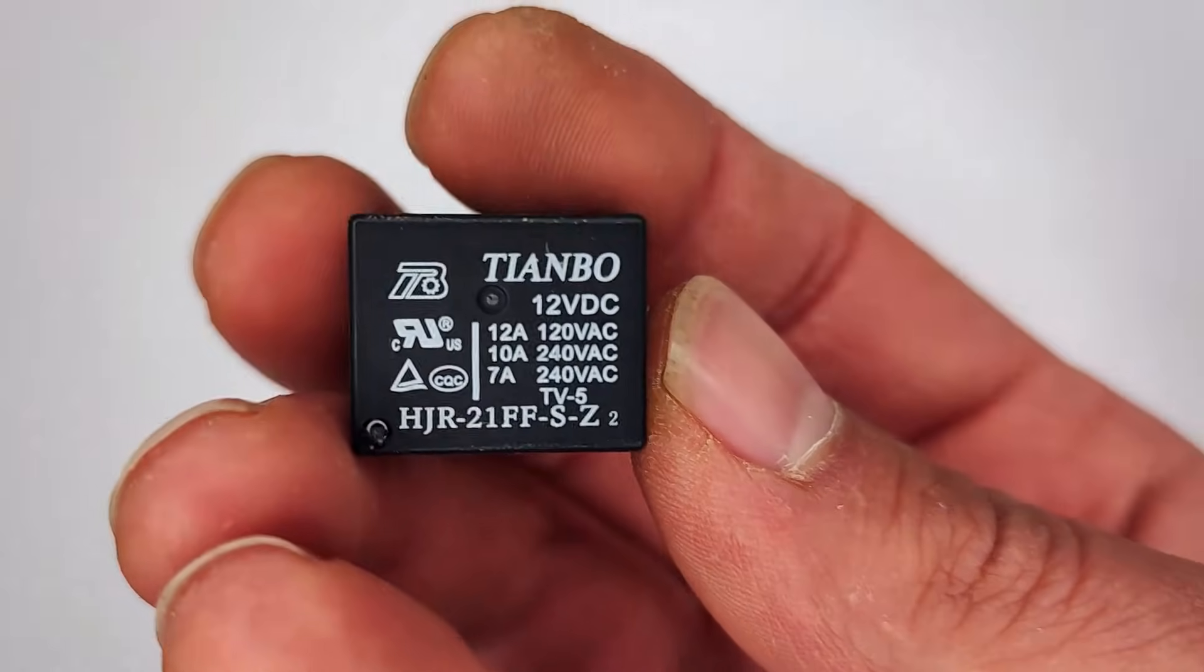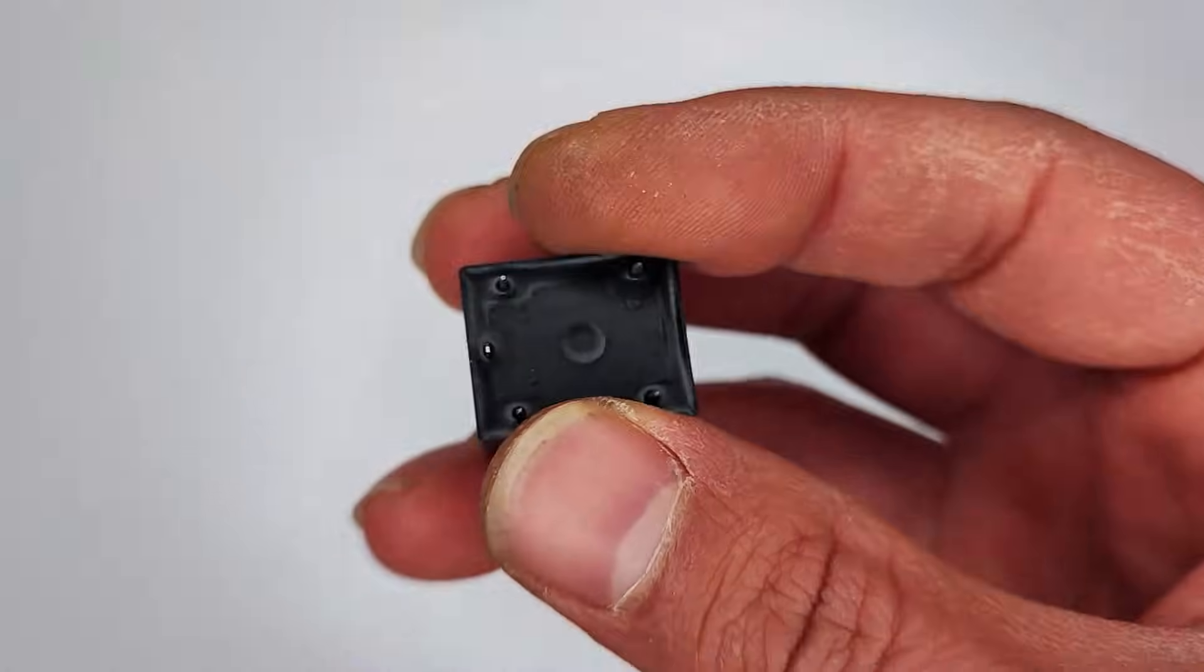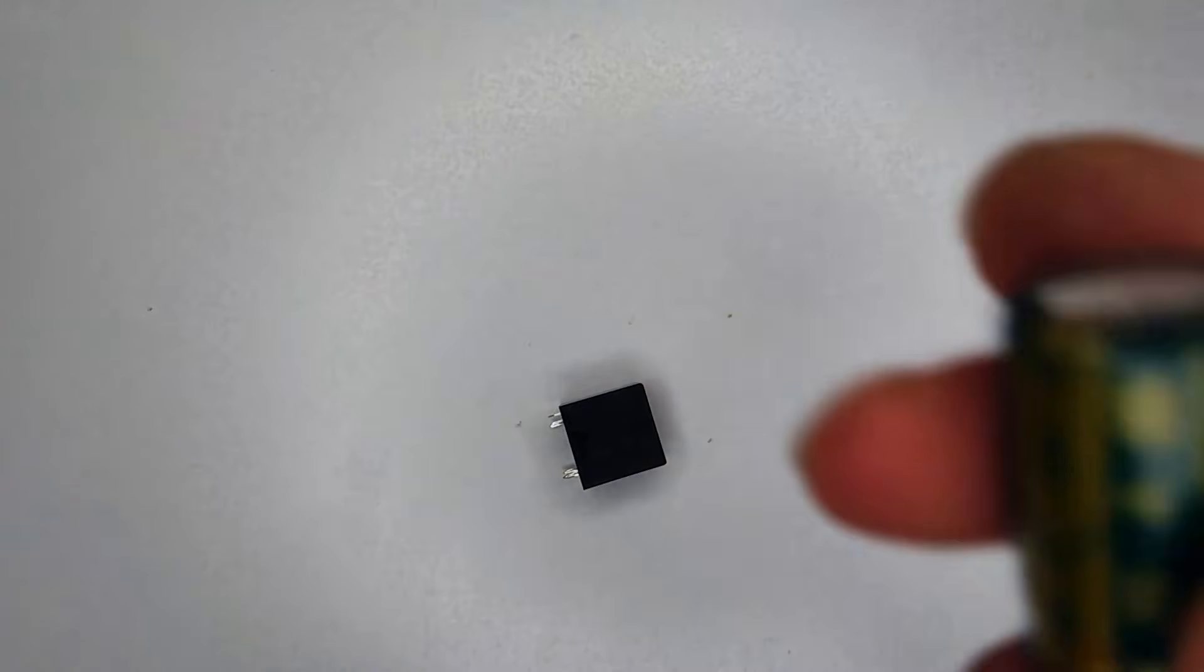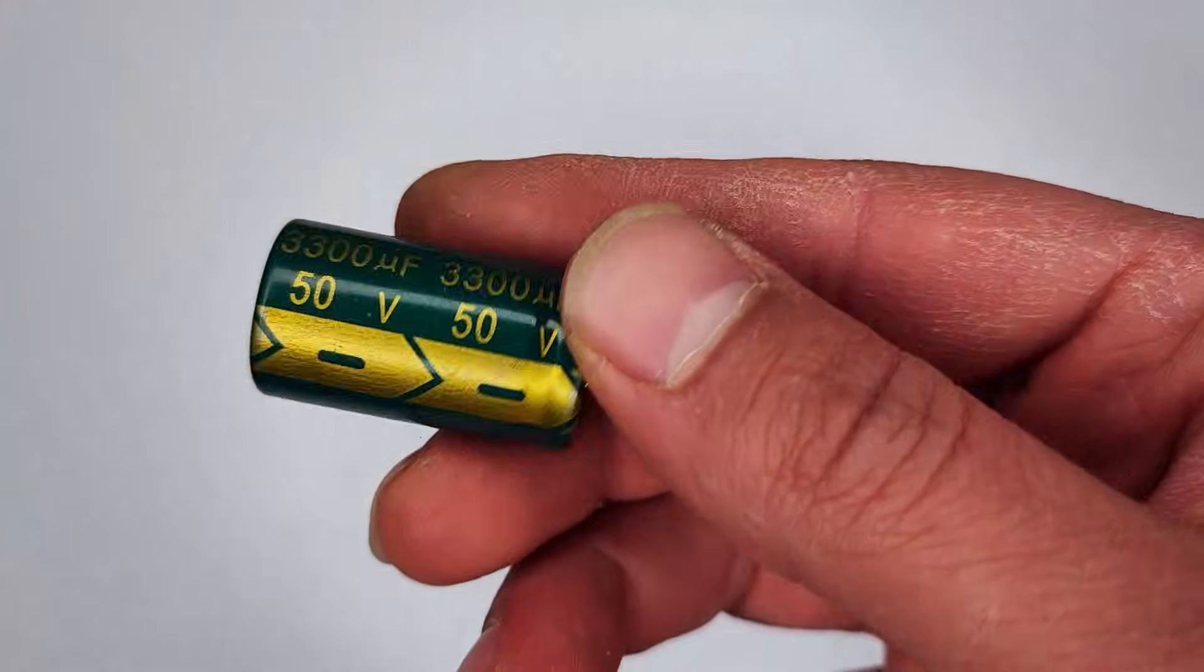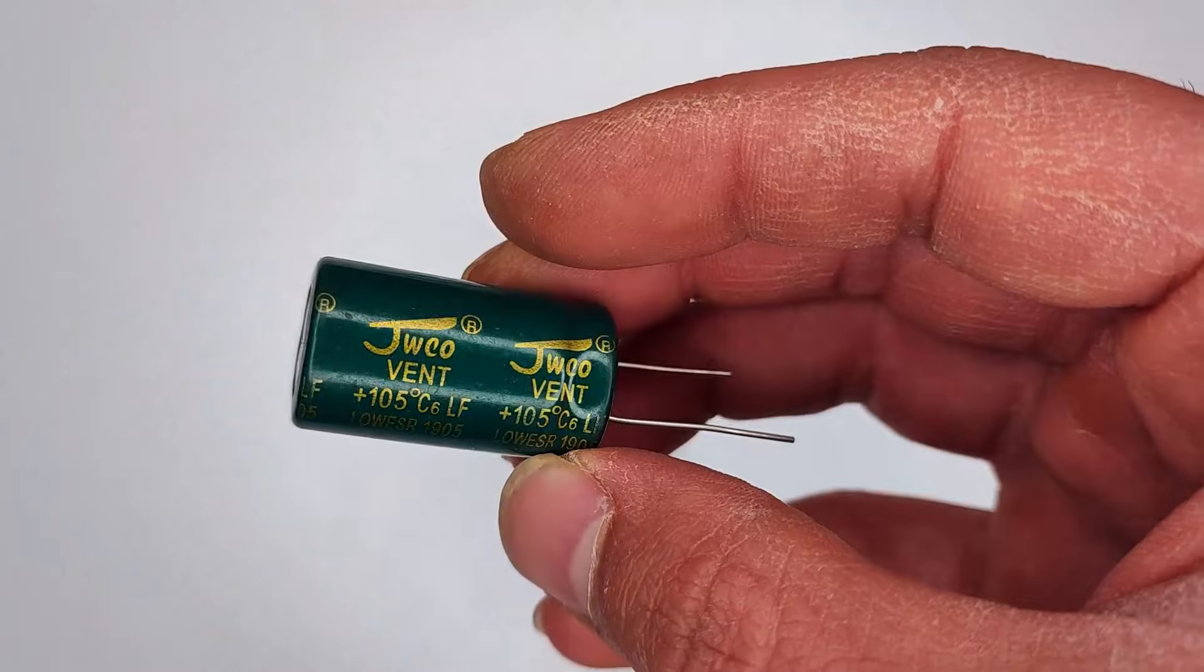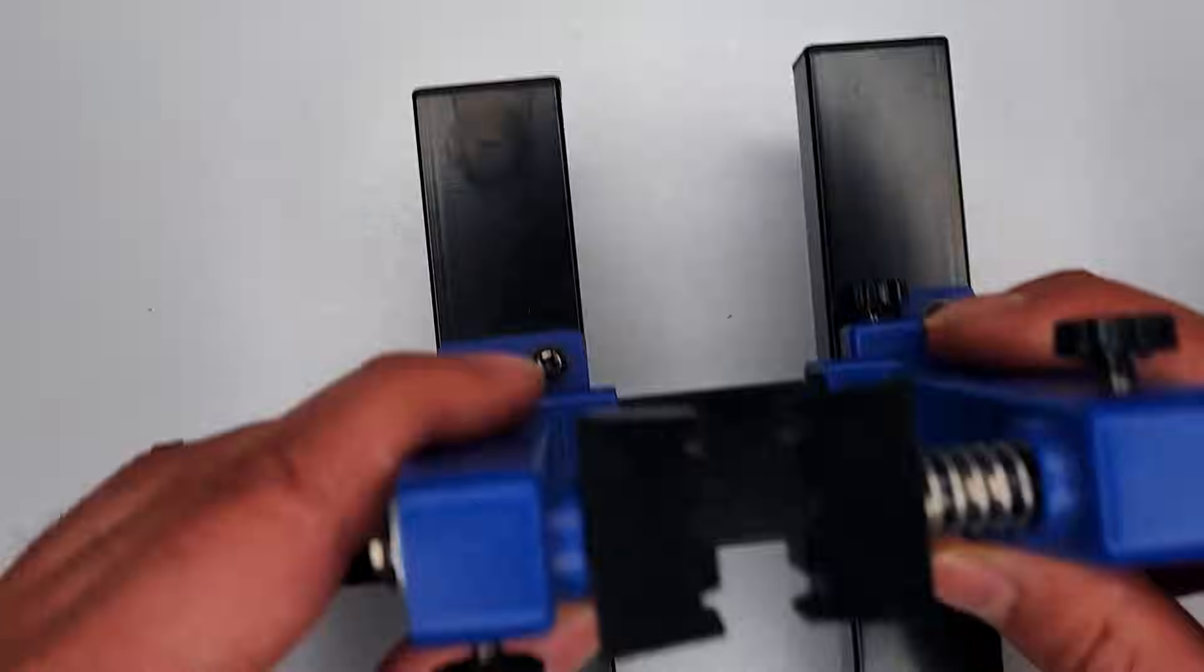Hey everyone, hope you're doing awesome today. In this video, we're taking a fun look at a classic old-school trick, making a blinking circuit using nothing but a 5-pin relay and a big electrolytic capacitor. Yeah, no microcontrollers, no transistors, just pure analog magic.